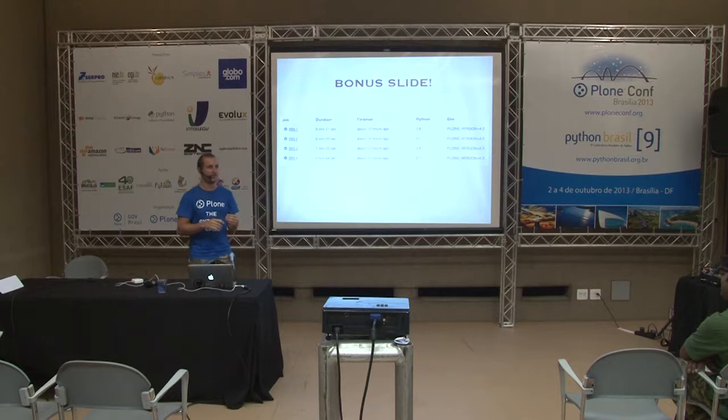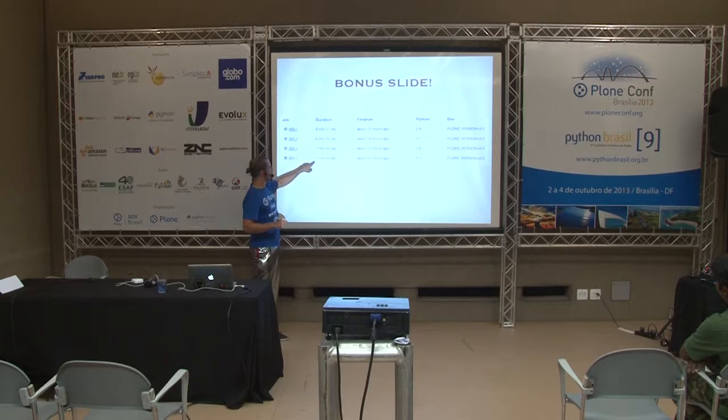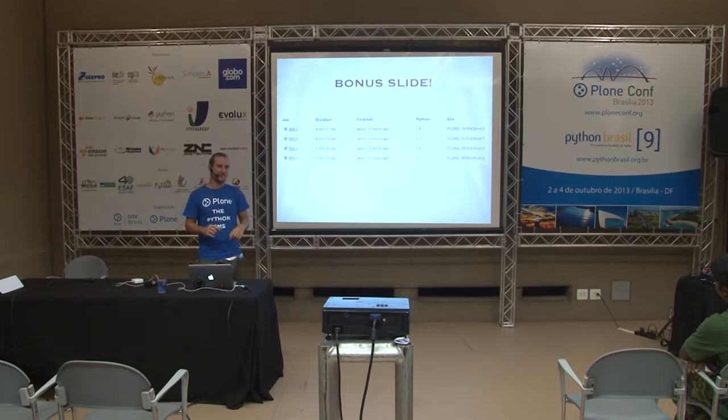Whenever we run a build on Travis for Plone API, we actually run it four times — for Plone 4.2 and 4.3 and against Python 2.6 and 2.7. It's fun to see the duration: 4.2 on 2.6 versus 4.3 on 2.7 is almost half the difference — nine minutes and five minutes.